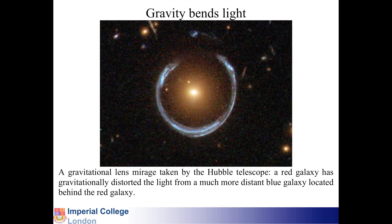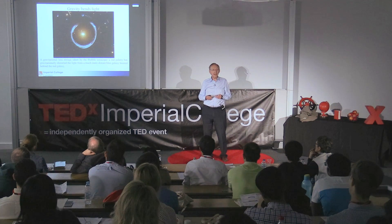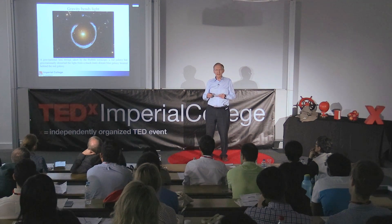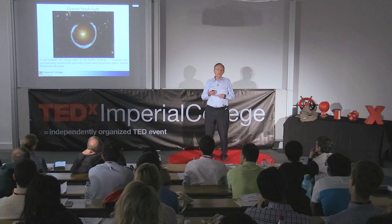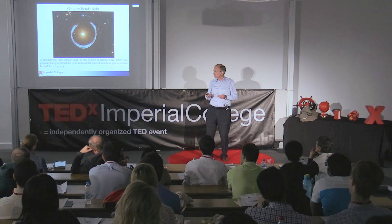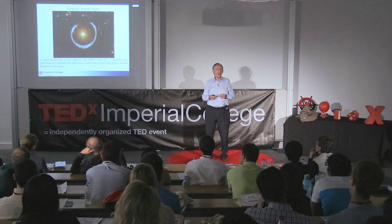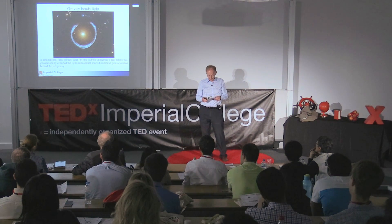These days, astronomers routinely see what they call gravitational lensing. This is a picture from the Hubble telescope of a great galaxy. Behind that galaxy is another galaxy emitting light, and as that light comes near the first galaxy it is bent in its gravitational field — it's flowing like water — and that's what produces this ring of light around the first galaxy. It's light that's been gravitationally lensed.